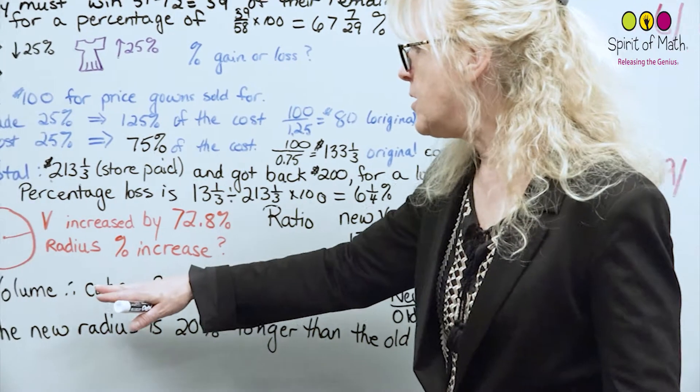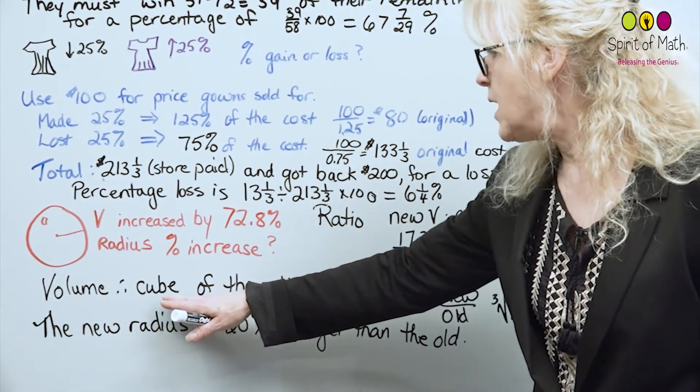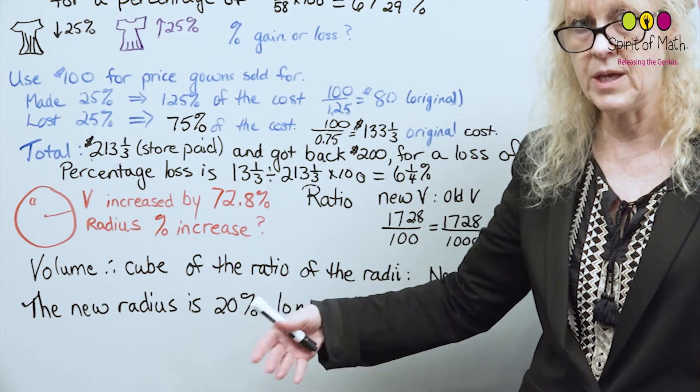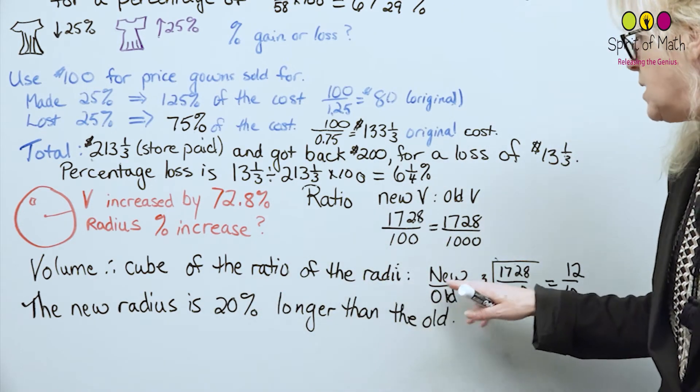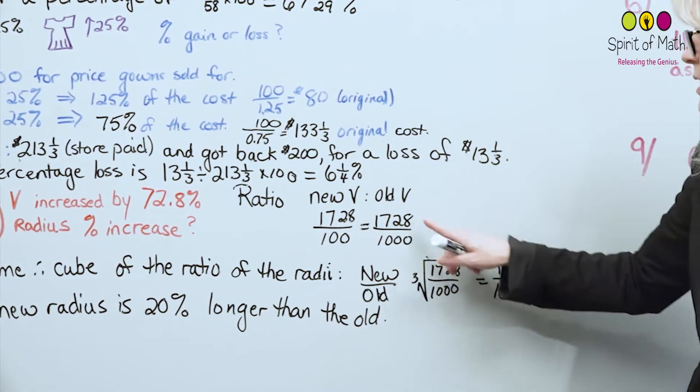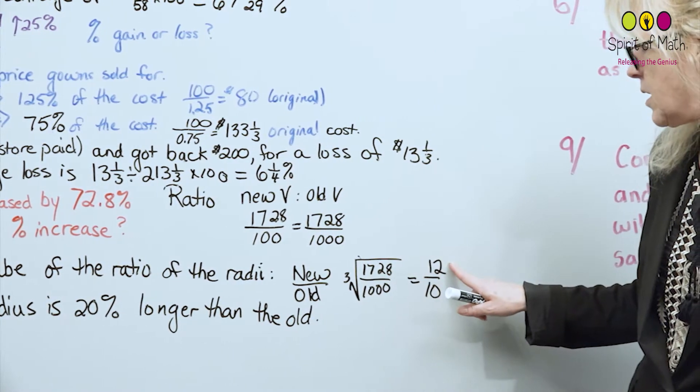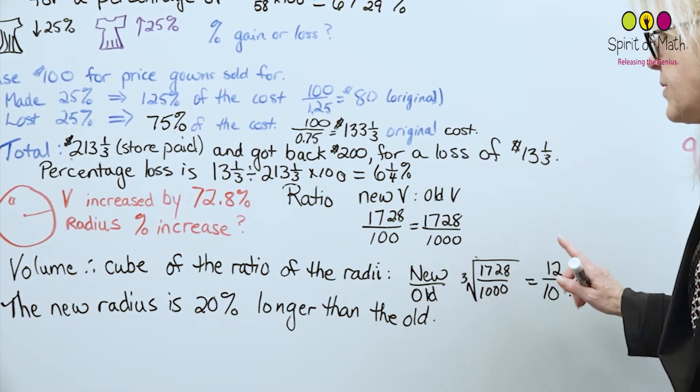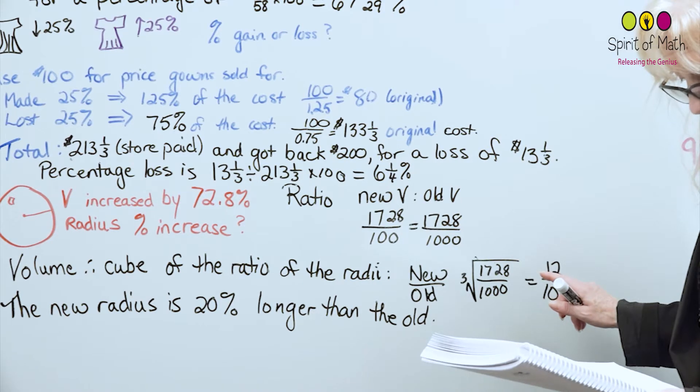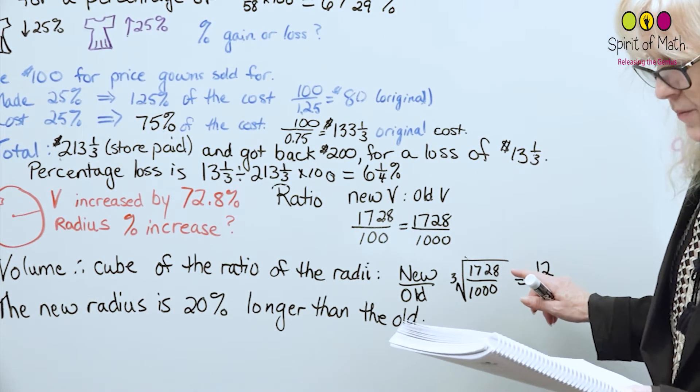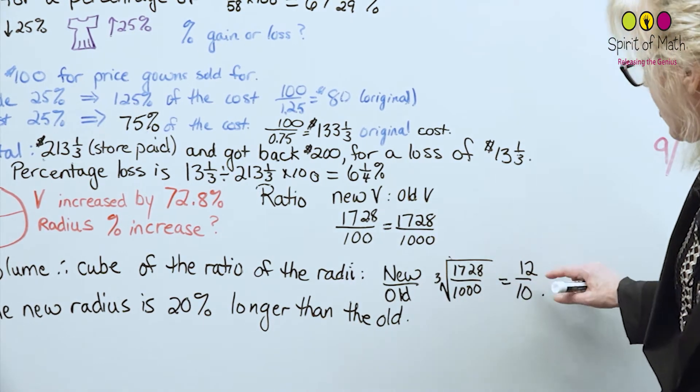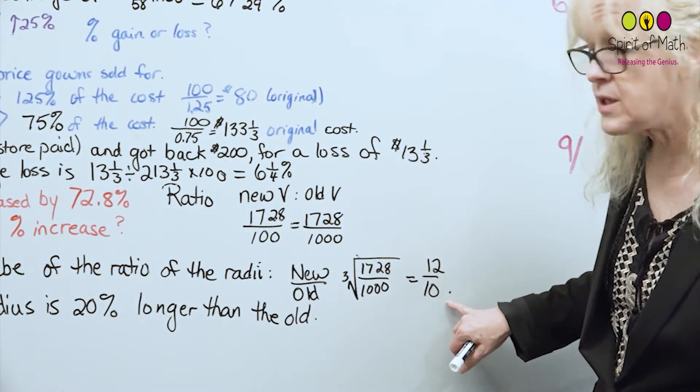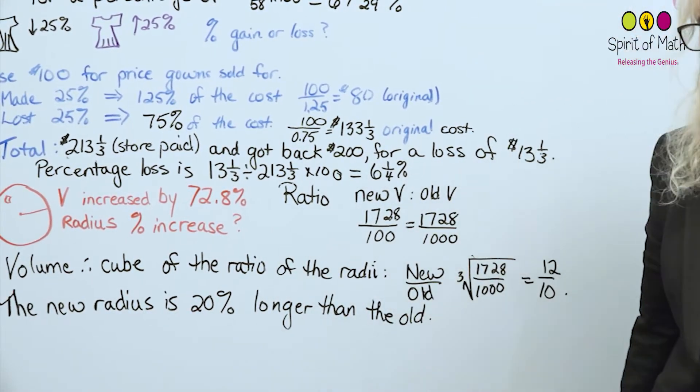Now, the volume, it's a volume, therefore if you want to find the radii, you need to take the cube of the ratio of the radii. The volume is the cube of the ratio of the radii because it's three-dimensional and the radii is only one-dimensional. So again, you take the new to the old and we take this and we take the cube root. And when you take the cube root, you get 12 over 10. And the new radius then is asking for the percentage. It says what is the percentage increase in the radius? So the new is 12 over 10, so the percent increase is that extra 2, and 2 out of 10 is 20%, so the new radius is 20% longer than the old.